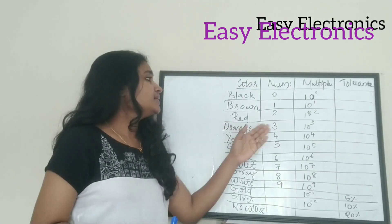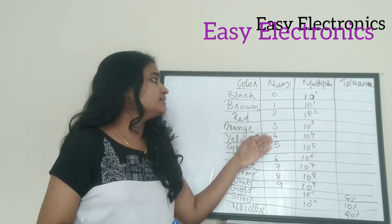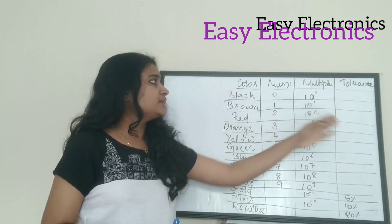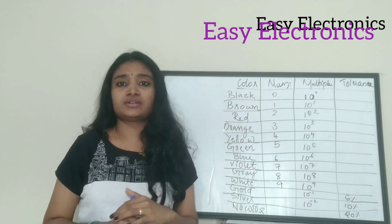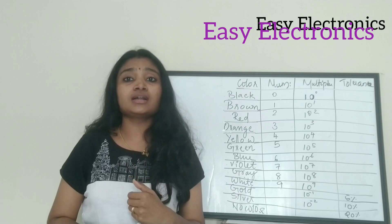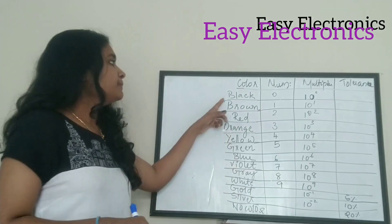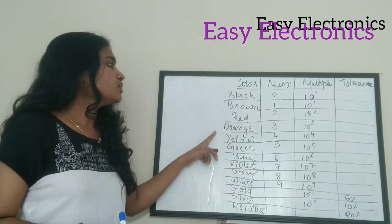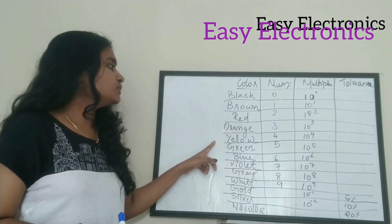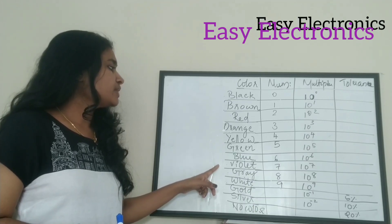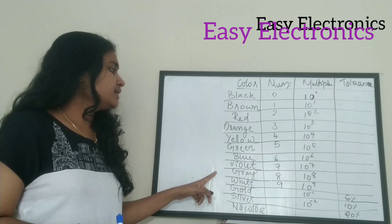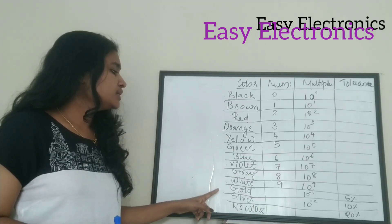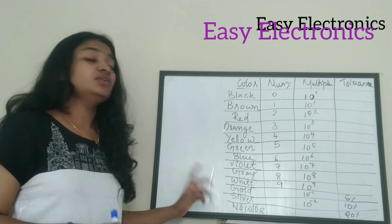This is the resistor color coding chart with 4 columns: color, number, multiplier, and tolerance. The colors are: black, brown, red, orange, yellow, green, blue, violet, grey, white, gold, silver, and no color.